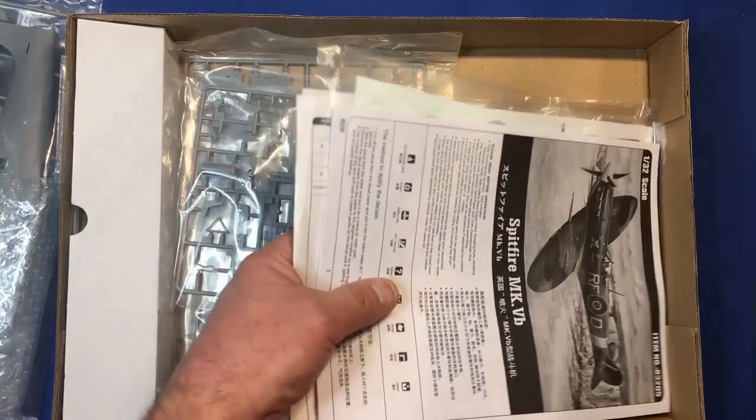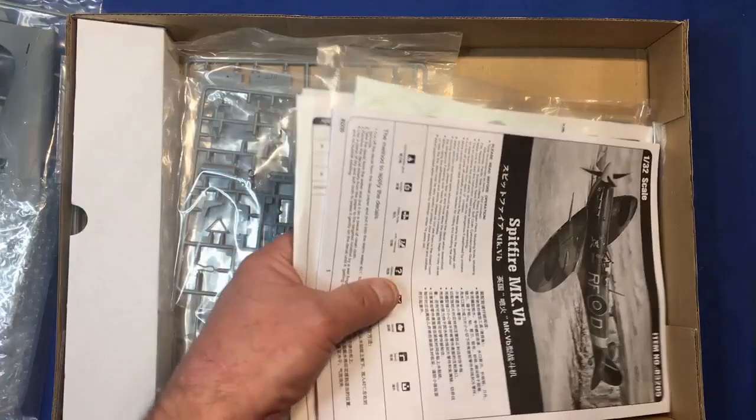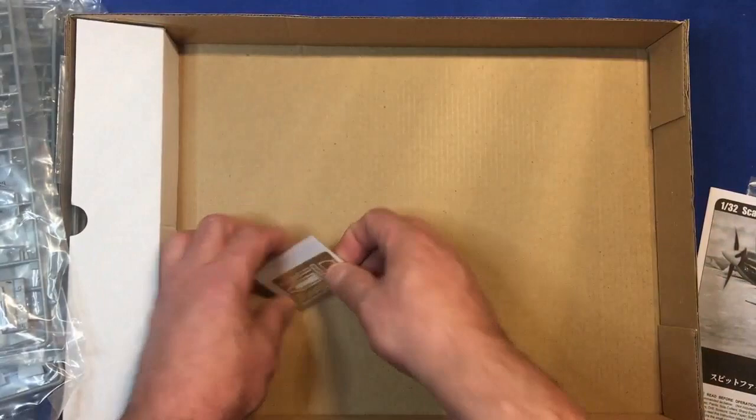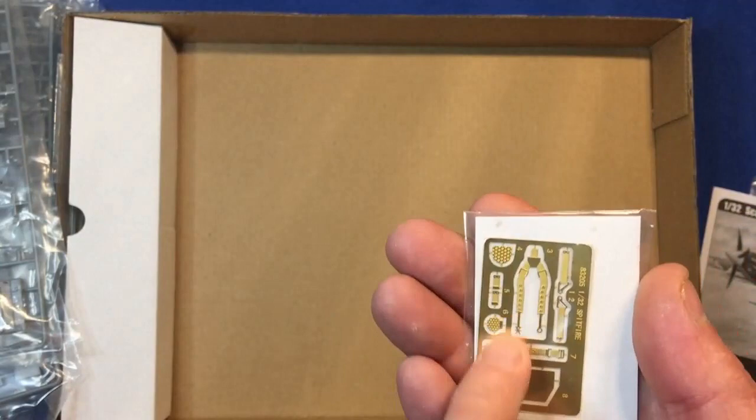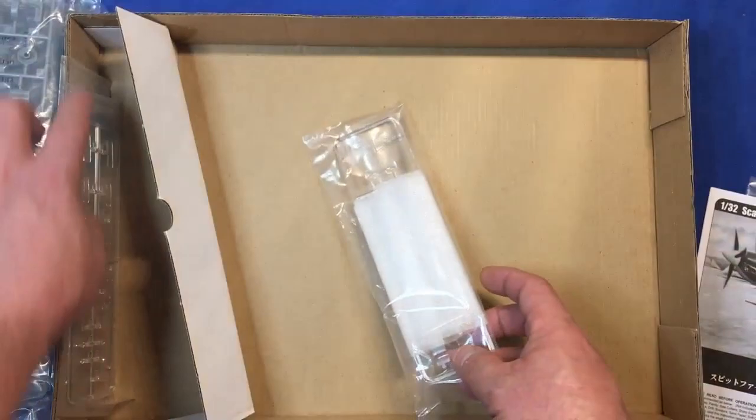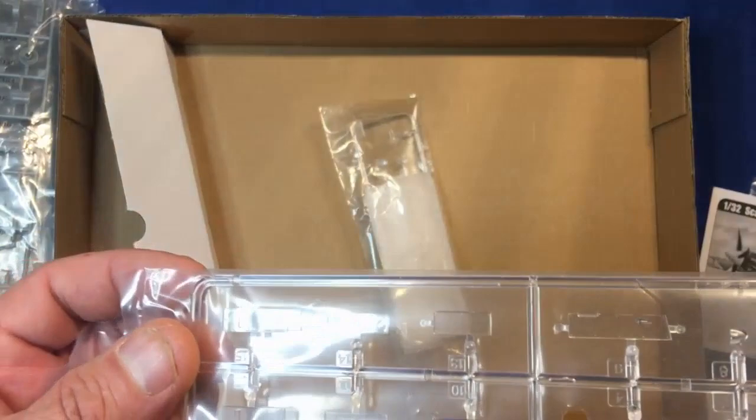There's seven sprues total, a small fret of PE which is belts and intakes, and then we've got this piece on the end which has our clear parts and some more clear parts here. Looks like these are gun covers, which is unusual - you can actually have the covers on but display the guns. Then we've got our vinyl tires there.